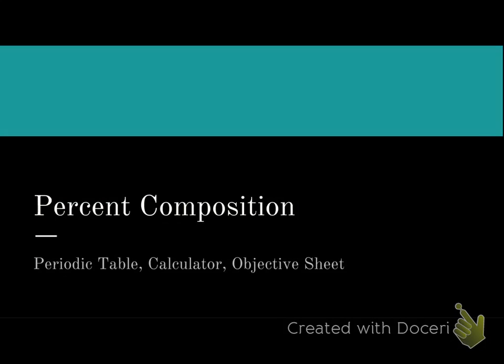This lecture is going to cover determining the percentage composition of elements and also finding out how many grams or the mass of a specific element might be within a given sample. A lot of this is rooted in things you've already seen in math class, so we're just going to apply that to stuff that you know from chemistry. Things you're going to need: periodic table, calculator, and your objective sheet.